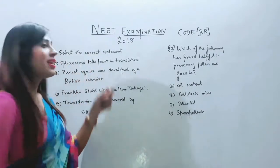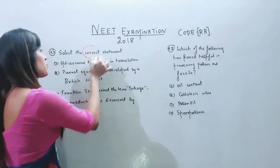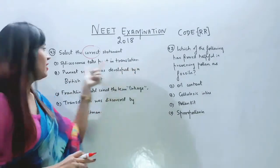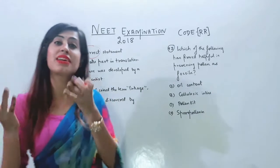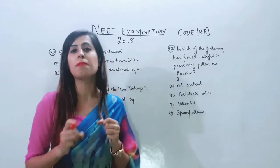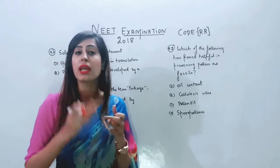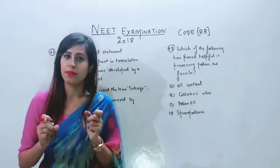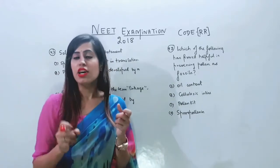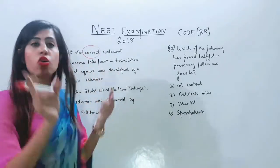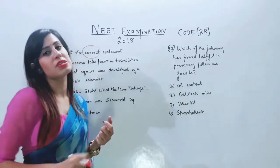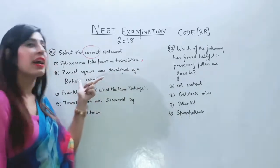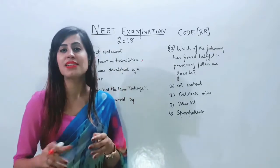The next question is to select the correct statement. The first option is: spliceosomes take part in translation. Spliceosomes are made of snRNA and proteins, and they carry out the splicing process, which is involved in post-transcriptional modification. Post-transcriptional modification includes splicing, capping, and tailing. So spliceosomes are involved in transcription processes, not translation. This statement is incorrect.